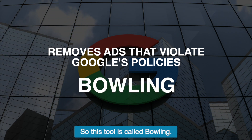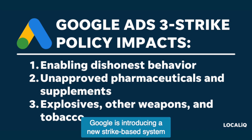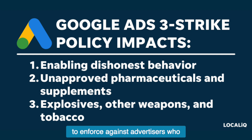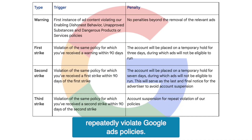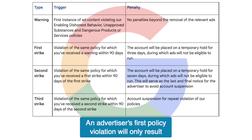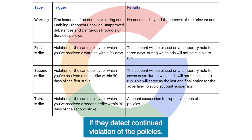This tool is called bullying. Starting October 21st, Google is introducing a new strike-based system to enforce against advertisers who repeatedly violate Google Ads policies. An advertiser's first policy violation will only result in a warning, but advertisers will earn their first strike if Google detects continued violation of their policies.